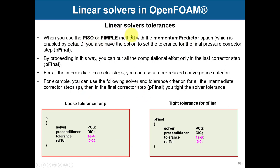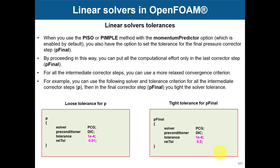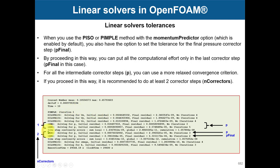Some solvers — like pisoFoam and pimpleFoam — let you enable the momentum predictor option. When you enable it, you have P and P_final. P_final is the very last iteration and you can put more effort there — using a tight tolerance for P_final and a looser one for P. This helps speed things up. But if your problem is not expensive or doesn't have difficult physics, you can go ahead and use a tight tolerance for both.